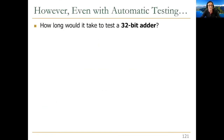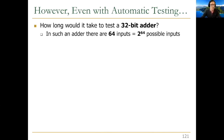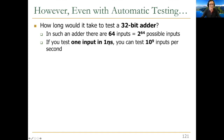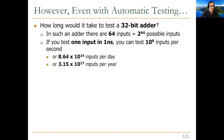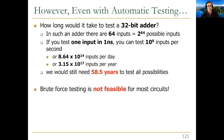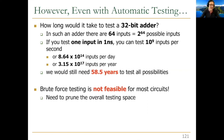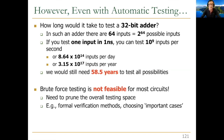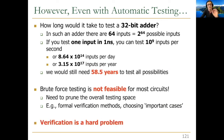Even with automatic testing, how long would it take to test a 32-bit adder? It has 64 inputs — 32 bits each for A and B — giving 2^64 possible inputs. If you test one input per nanosecond, you can test 10^9 inputs per second. You'd need 58.5 years to test all possibilities. This means exhaustive or brute-force testing of every possible input is not feasible. You need to prune the testing space, choose important cases, and eliminate cases that don't matter.